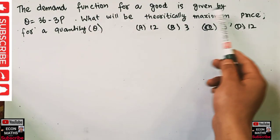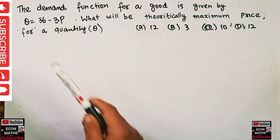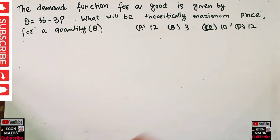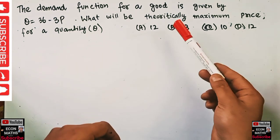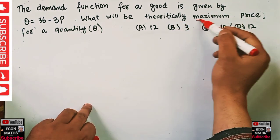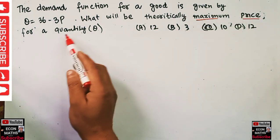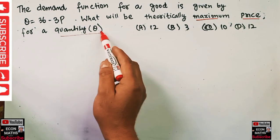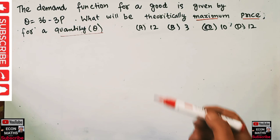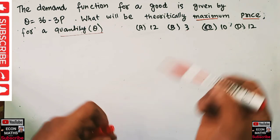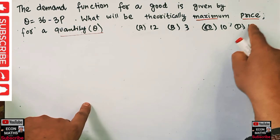The demand function for a good is given by Q = 36 - 3P, where Q is the quantity and P is the price. We have to find out the theoretically maximum price for a commodity or a quantity given this demand function. The options are 12, 3, 10, or 12.